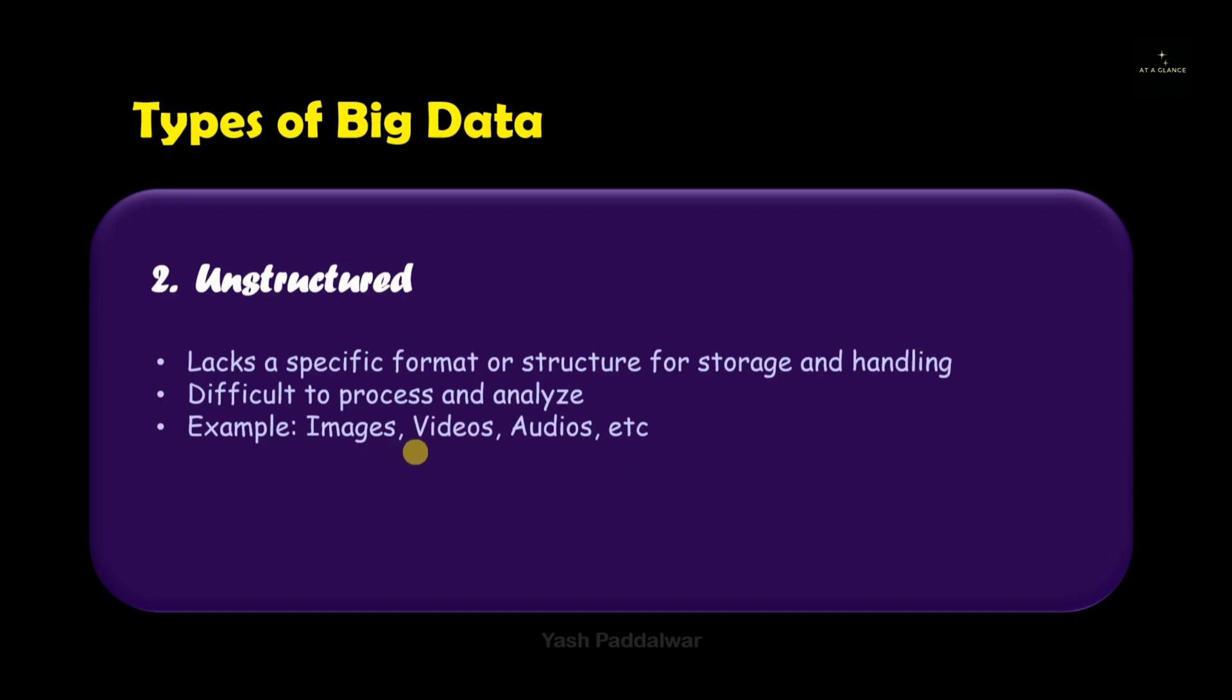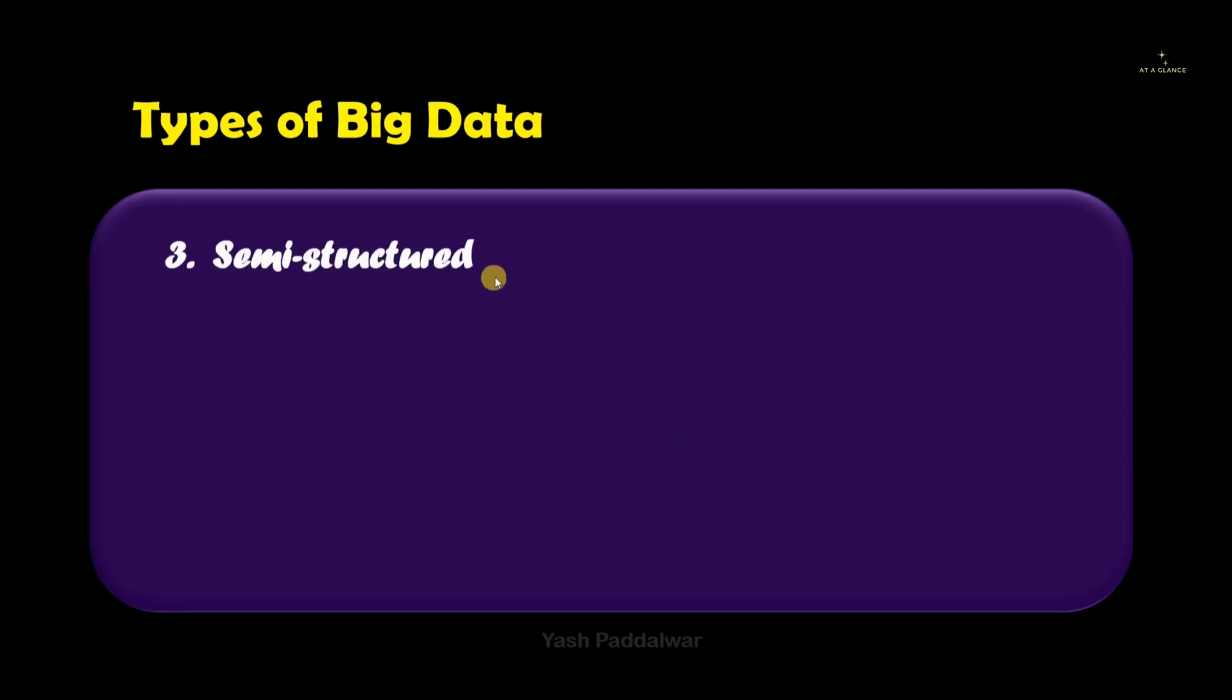We need to extract the meaning or the knowledge from that particular data. For example, after making a search from the search engine we get different formats of output. We may get text files, different videos, audios, or different images. So this collection is nothing but unstructured.